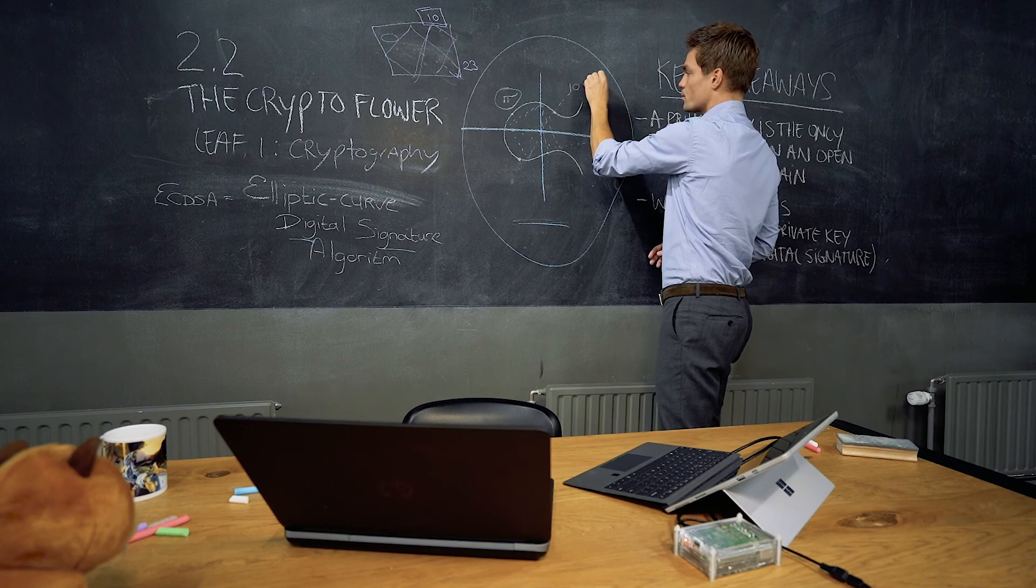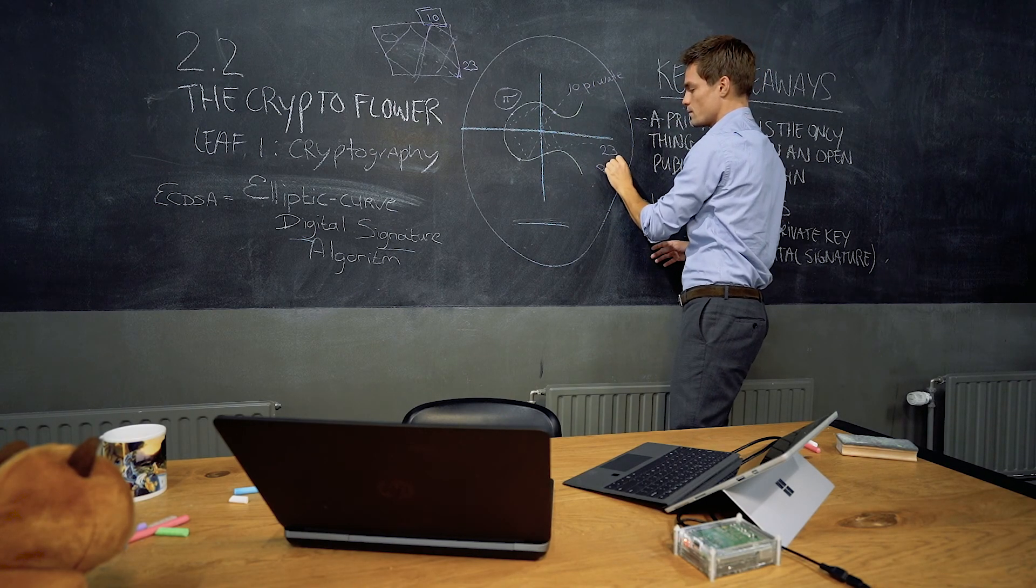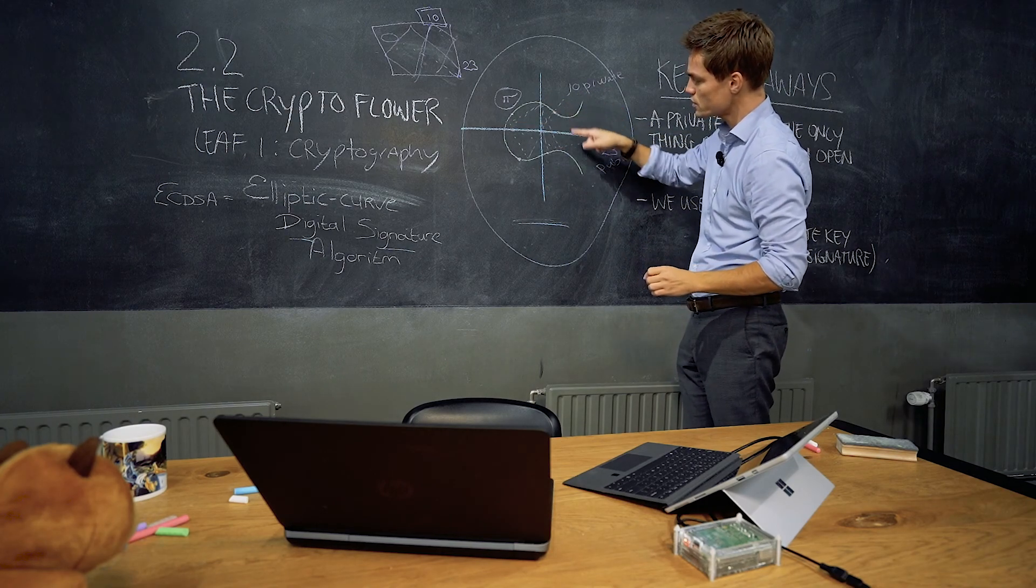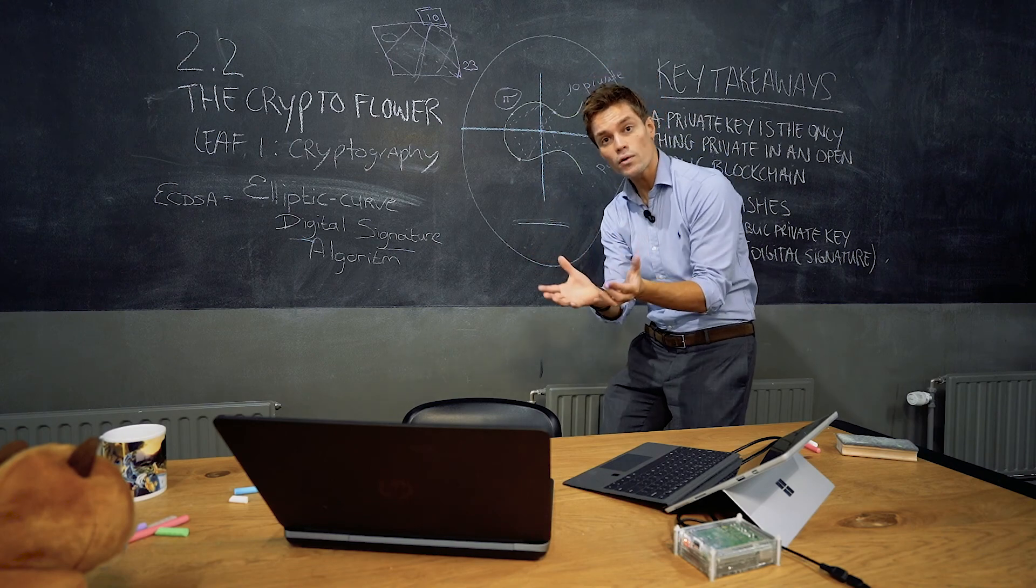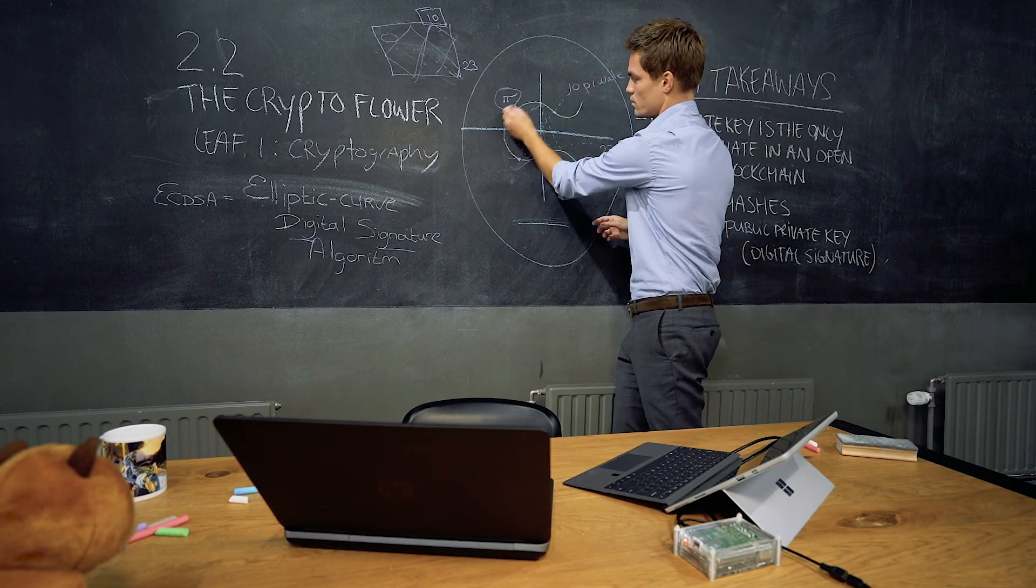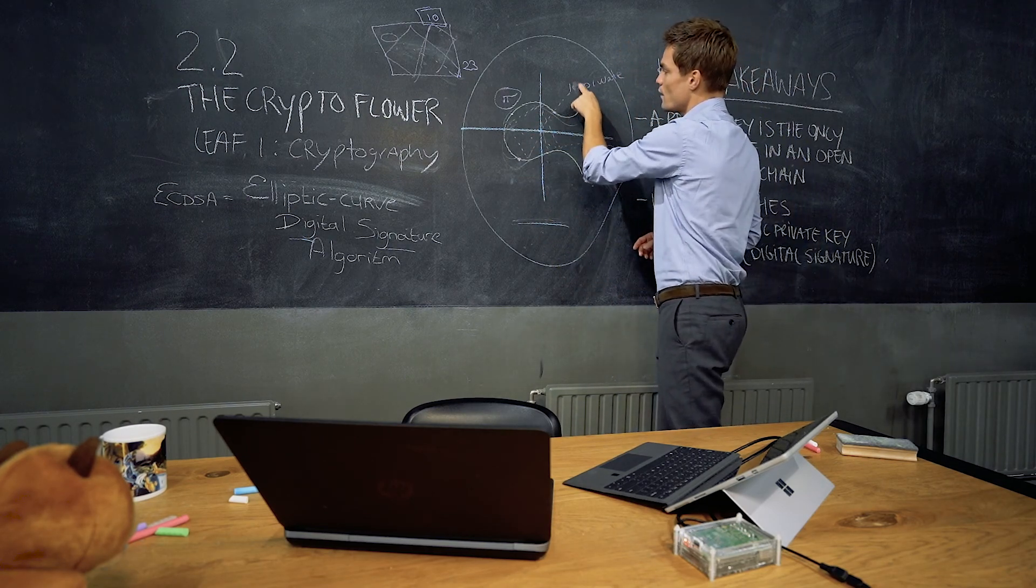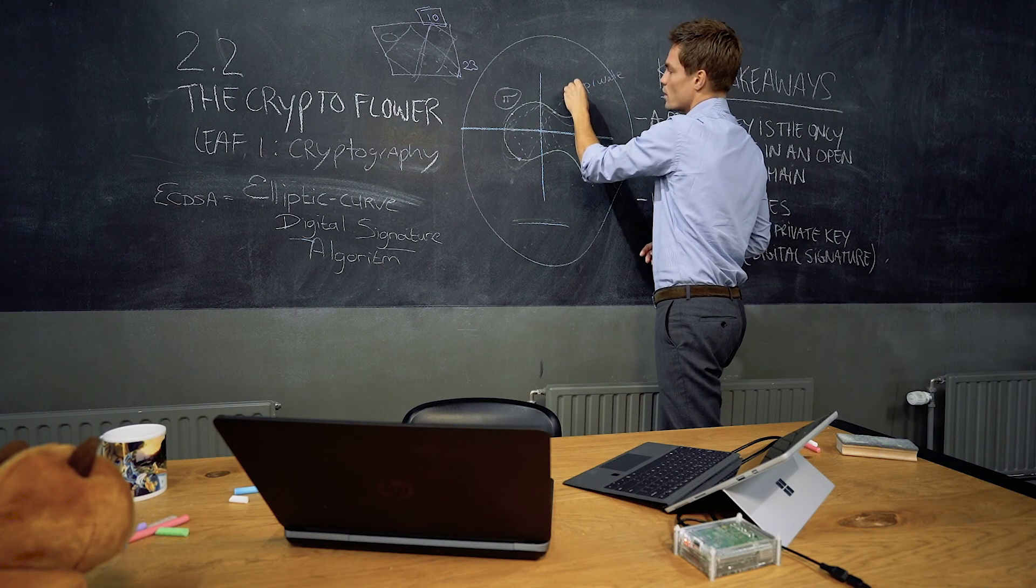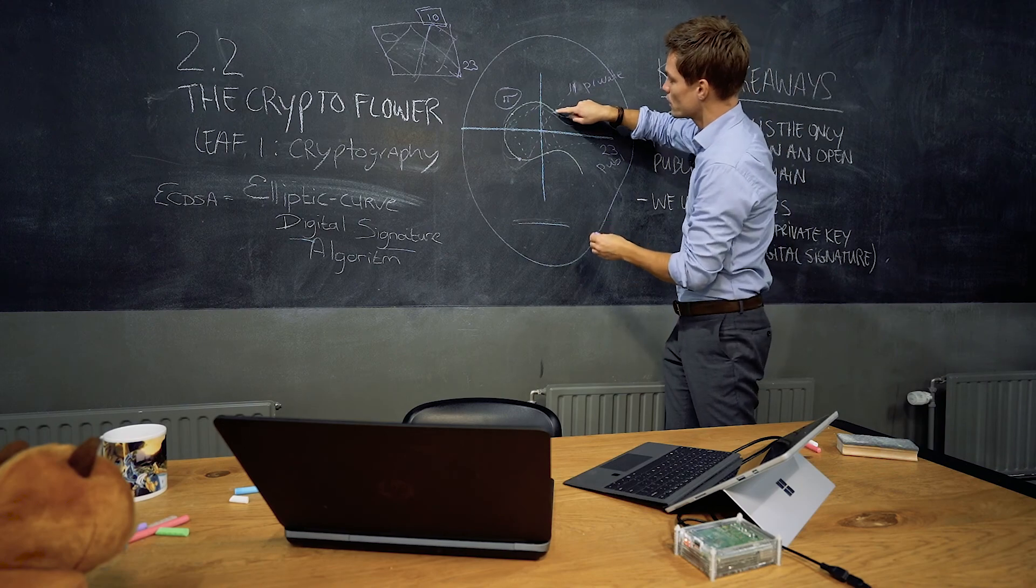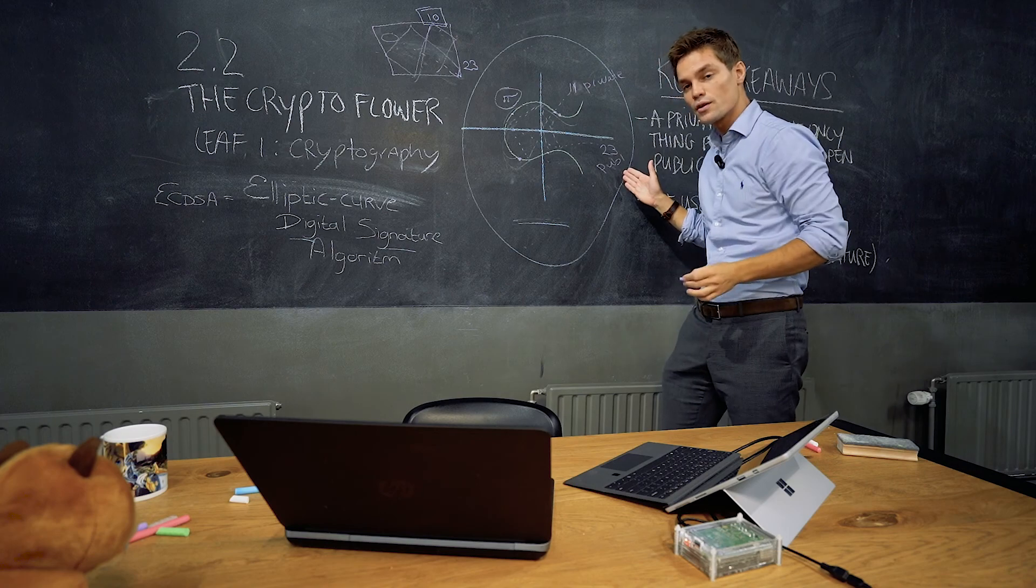So we're taking a random number, the number 10, and we shoot it in this Samsung television. And it keeps on bouncing and then all of a sudden it comes out as the number 23. This is your private key. This is your public key. It's the exact same thing, only it's made anonymously. It's converted, it's cloaked by using an algorithm. And it resulted in a different number. So if I have a different input, I will have a different output. Because then I won't shoot it from here, then I will shoot it from here.